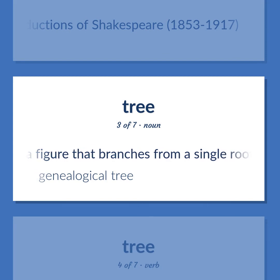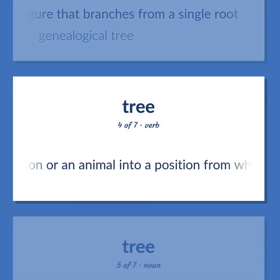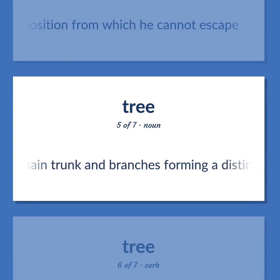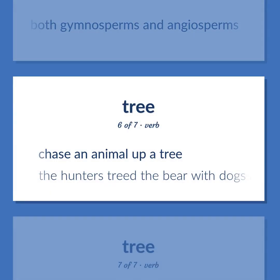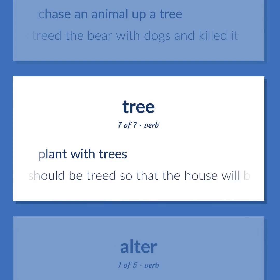A figure that branches from a single root. Genealogical tree. Force a person or an animal into a position from which he cannot escape. A tall perennial woody plant having a main trunk and branches forming a distinct elevated crown; includes both gymnosperms and angiosperms. Chase an animal up a tree — the hunters treed the bear with dogs and killed it. Plant with trees — this lot should be treed so that the house will be shaded in summer.